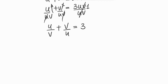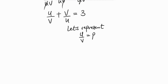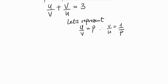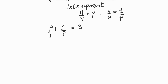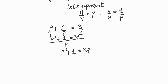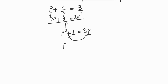Let p = u/v, which means v/u = 1/p. So we have p + 1/p = 3. Multiplying through by p gives p² + 1 = 3p, and rearranging: p² − 3p + 1 = 0.